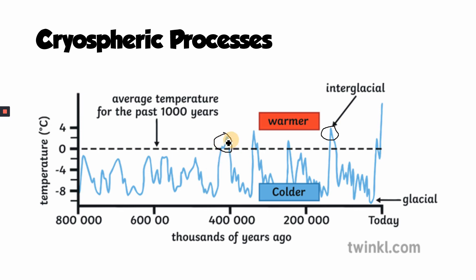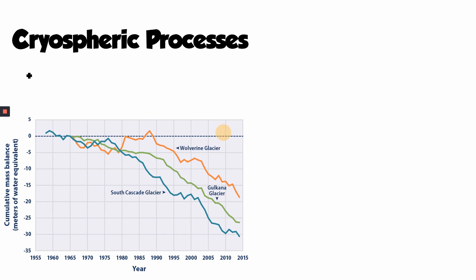When interglacials or glacial periods occur, water moves to or from the cryosphere. As temperatures get colder, more snowfall occurs, more water is locked up in glaciers and ice sheets, and sea levels fall. The opposite is true in warmer interglacial periods — less precipitation falls as snow, more ice sheets melt, water is transferred to the sea, and sea levels rise. We can see this happening today, as climate change causes temperatures to rise and ice sheets and glaciers melt.